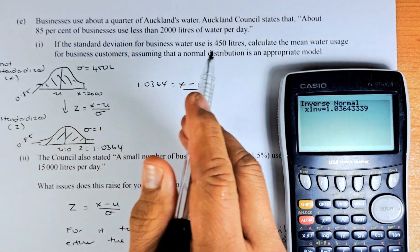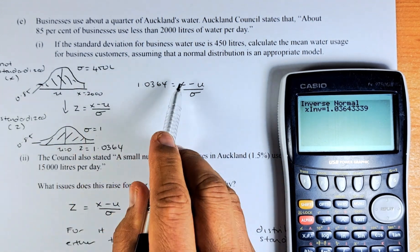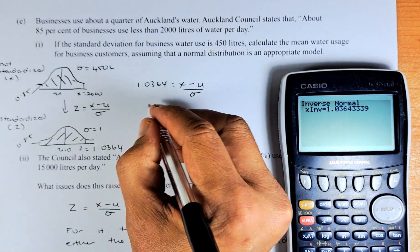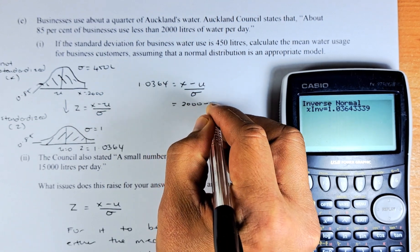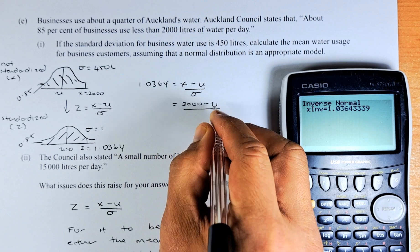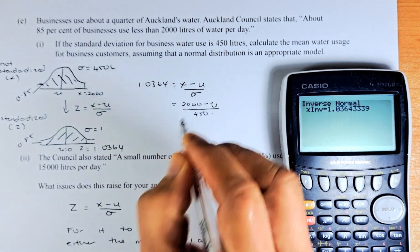Using the values here, your nu is what you're going to find. Your sigma is 450 and your X is 2000. So 1.0364 equals 2000 minus nu over sigma is 450.